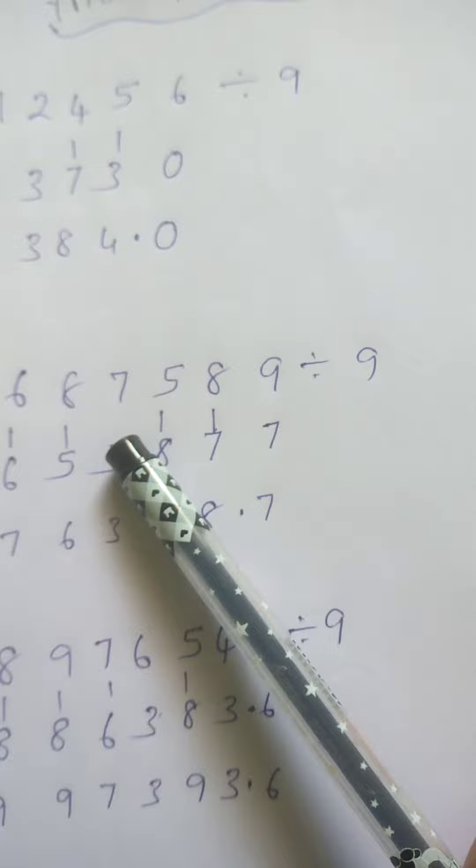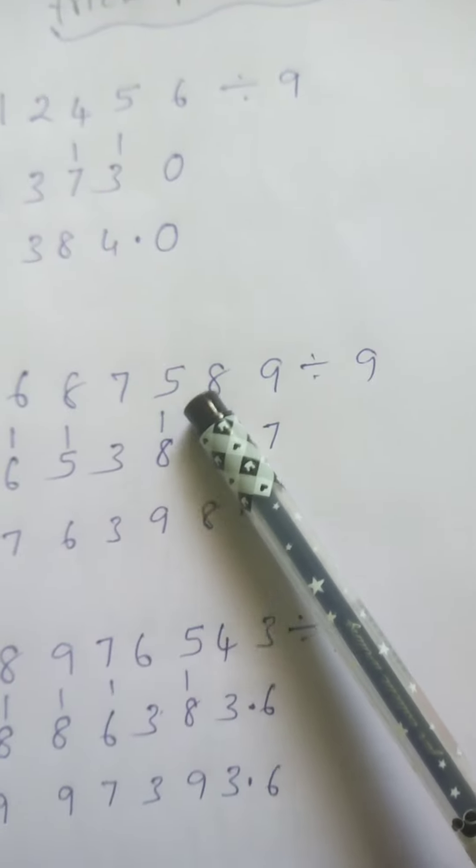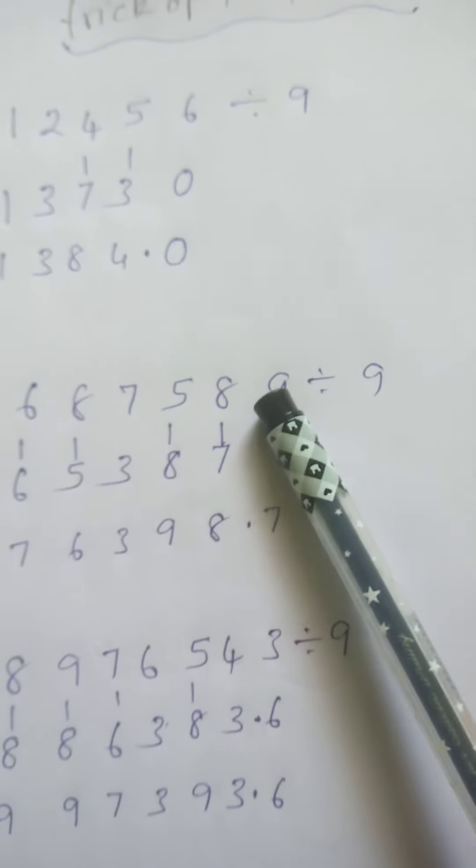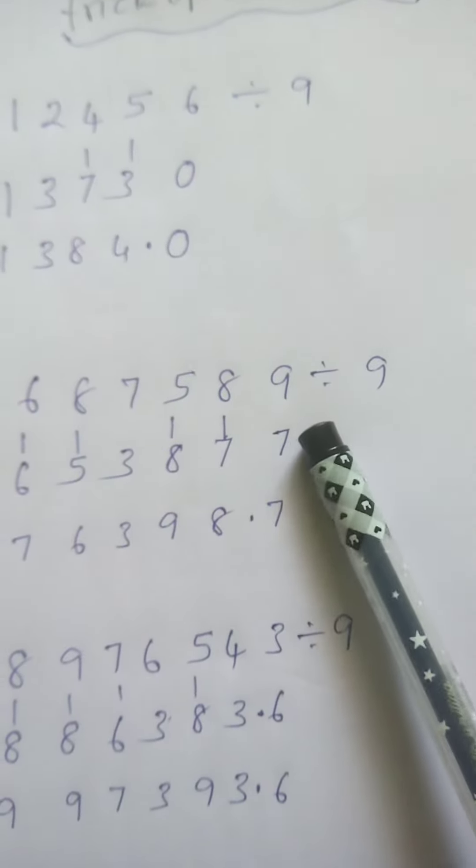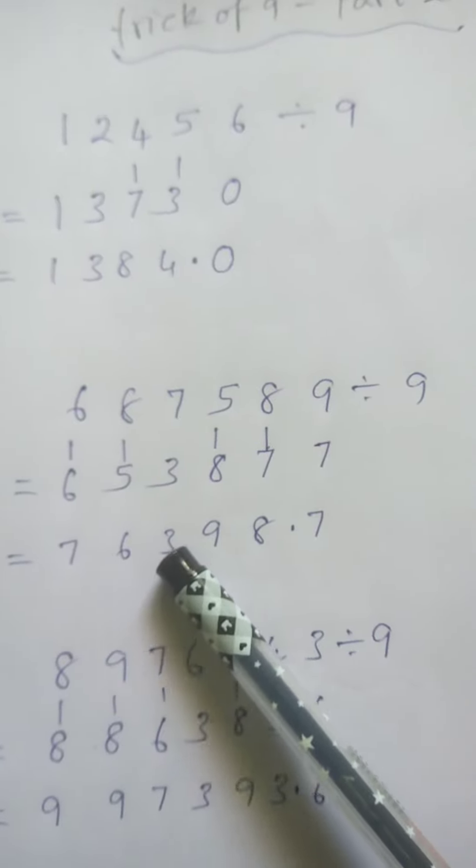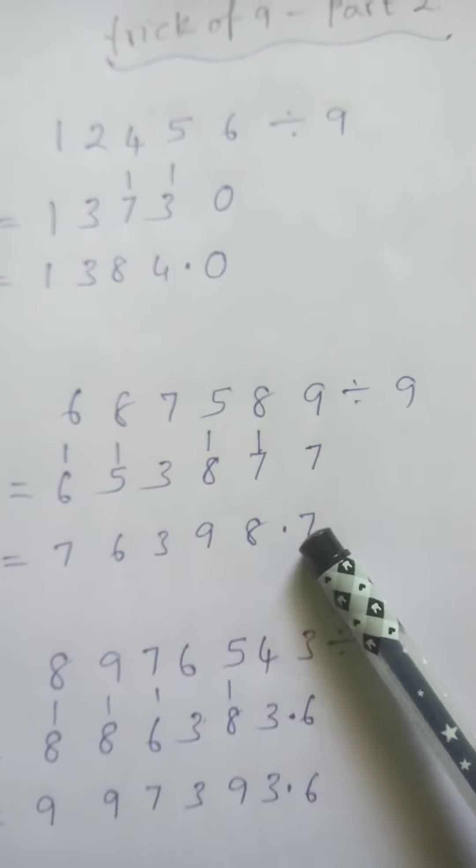is 8, 8 as it is. 8 plus 8 is 16, 16 minus 9 is 7, carry 1. 7 plus 9 is 16, 16 minus 9 is 7, carry 1. So the answer is 7 6 3 9 8 7.